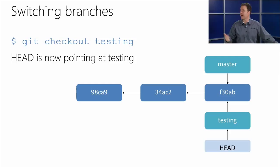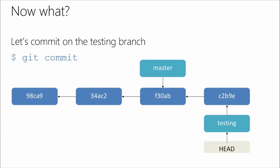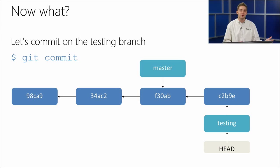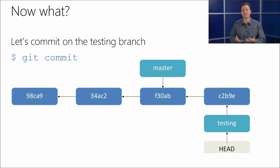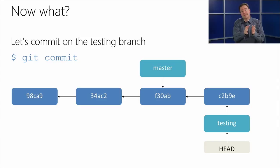Checking out the testing branch does nothing to your directory — except now if you commit, you'd be moving that testing branch file by changing what commit it's pointing to. After a commit, it just slides over — master is now a different version pointing to a unique snapshot, whereas testing is pointing at a different snapshot. This idea of branches as pointers to snapshots is what differentiates Git.